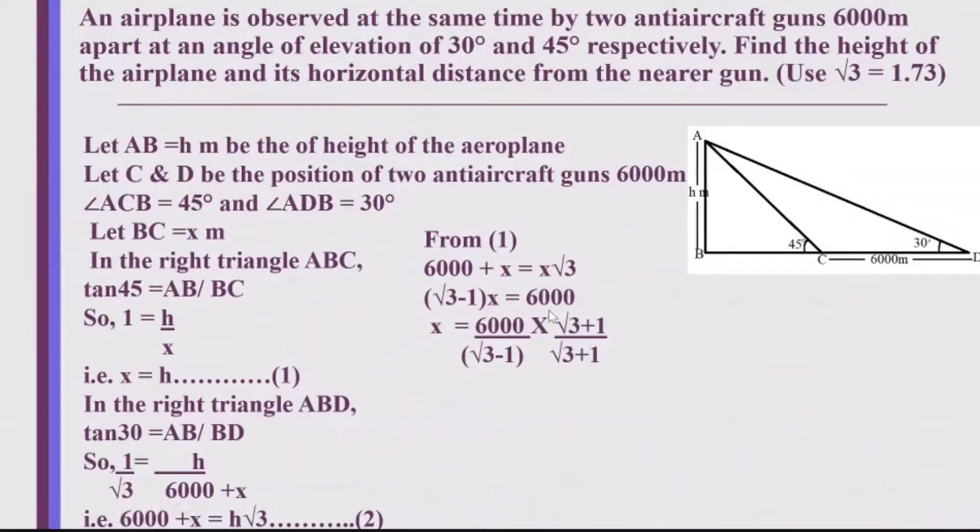Now, I cannot leave my answer with an irrational denominator. So, I rationalize the denominator by multiplying and dividing it by root 3 plus 1. So, multiplying 6,000 by root 3 plus 1, I get 6,000 into root 3 plus 1. And multiplying root 3 minus 1 by root 3 plus 1, I get root 3 square minus 1 square which is equal to 3 minus 1 which is equal to 2. So, I get 6,000 upon 2 into root 3 plus 1.